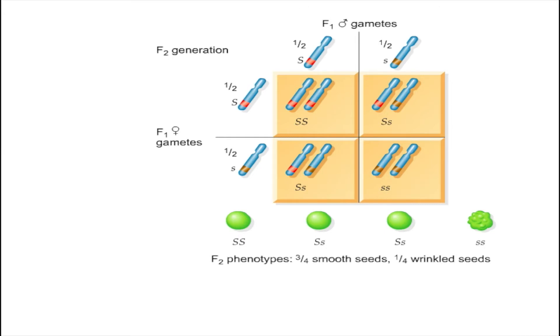We call each trait a phenotype, and thus the phenotypic ratio is 3 to 1. Notice, however, that there are three types of factor pairs: one big S, big S, two big S, little s, and one little s, little s. We call each type of pair a genotype, and thus the genotypic ratio is 1 to 2 to 1.